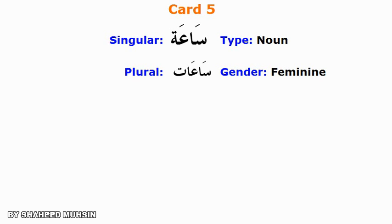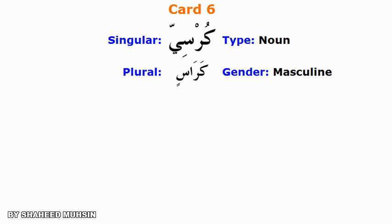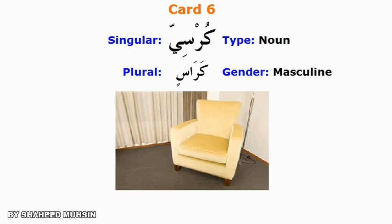Saat. Plural form: Saat — Watch, clock. Karasi — Chair.